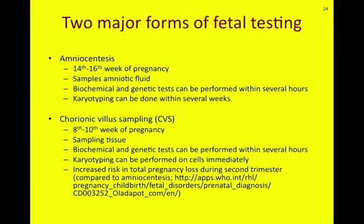These biochemical and genetic tests can be performed within several hours of sampling the amniotic fluid. However, karyotyping — actually looking for chromosomal disorders — can only be done several weeks after amniocentesis, because there aren't a large number of cells in the amniotic fluid. You have to culture these cells, allow them to grow, and then perform robust karyotyping to look at the staining patterns of chromosomes and test for disorders such as Down syndrome.